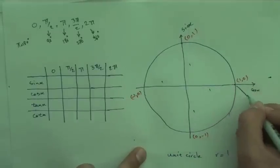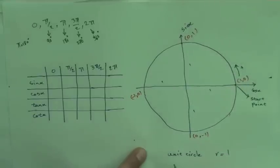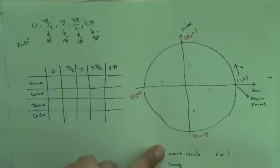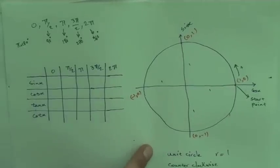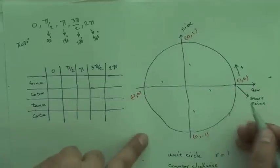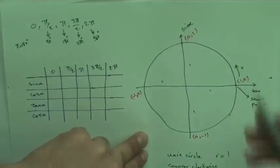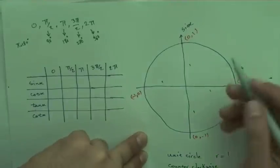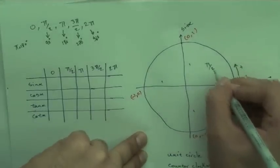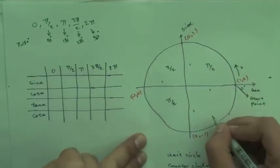Always start from the right-hand point and go counterclockwise. So the starting angle is 0 degrees, and each quarter of the circle is π/2. That gives us π/2 for each quarter.